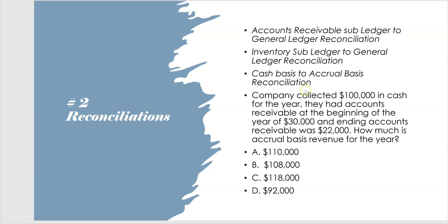In a reconciliation from cash to accrual, the CPA exam will tell you how much cash was collected — like $100,000 in this case — was collected in cash for the year. They'll tell you that they had accounts receivable at the beginning of the year, accounts receivable at the end of the year, and they want to know how much is accrual basis revenue for the year — how much was earned if this much was collected. So, if they collected $100,000 in cash, how much was earned for the year if accounts receivable started at $30,000 and ended the year at $22,000?